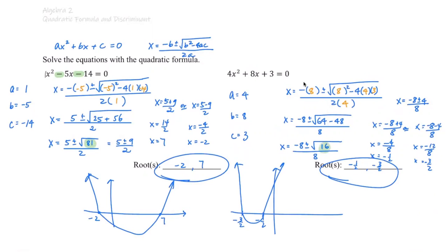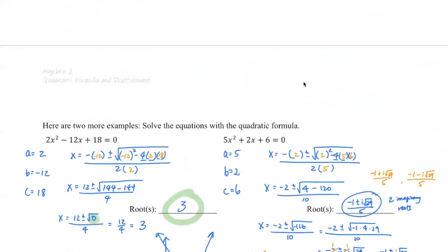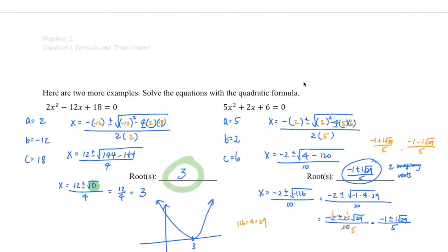The second example, it's 16. For the third example, it is zero. Right here is zero. And then the fourth example, the discriminant value, it's negative 116.